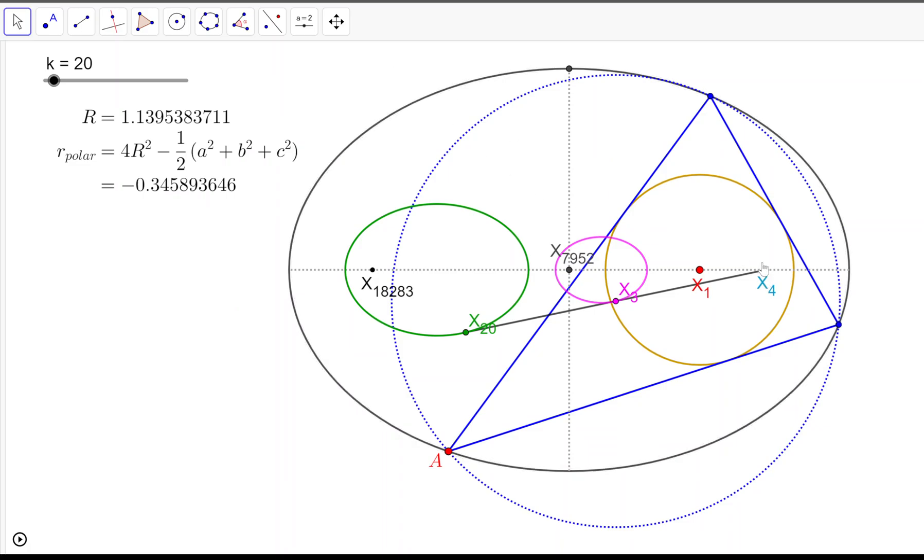When you do that, it constrains the center to fall on an ETC triangle center known as 7952. And the other focus will fall on the reflection of X4 on 7952, which on ETC is X18283.